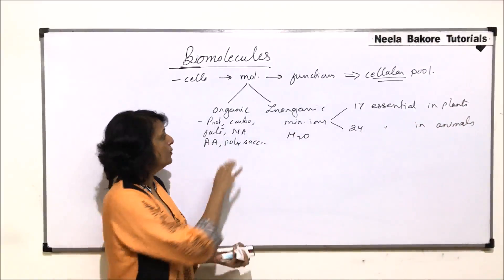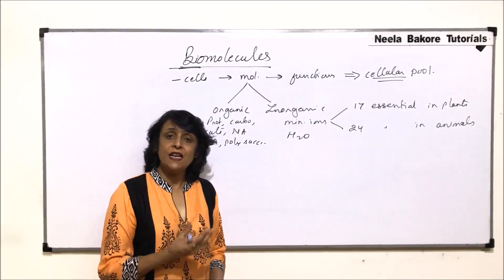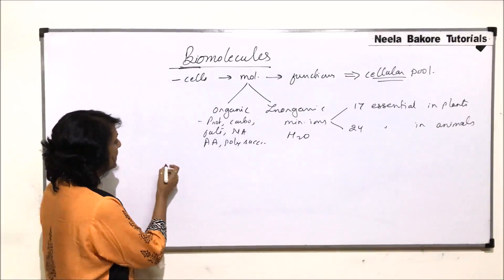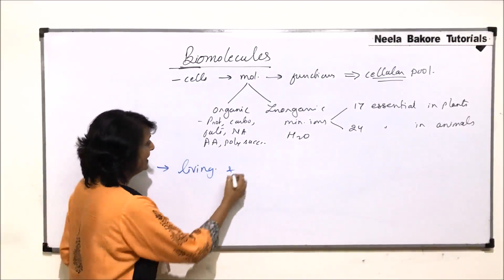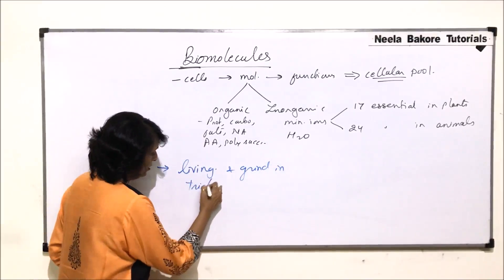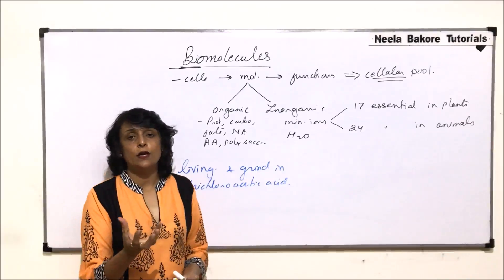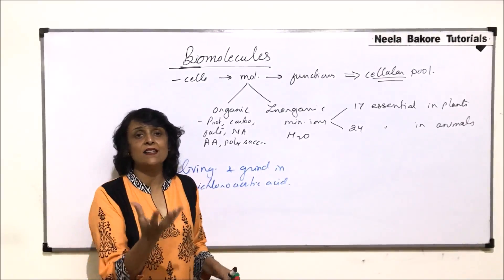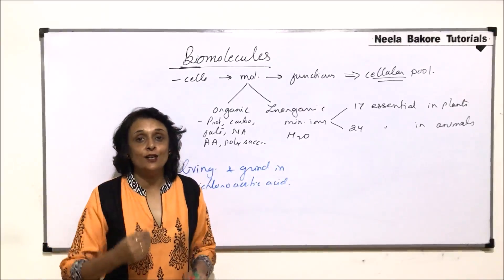To find out which organic substances are present in a cell, we need a detection method. The method is simple: we take a living tissue and grind it in trichloroacetic acid using a pestle and mortar. After grinding we get a slurry. Once we filter it, we get two fractions.